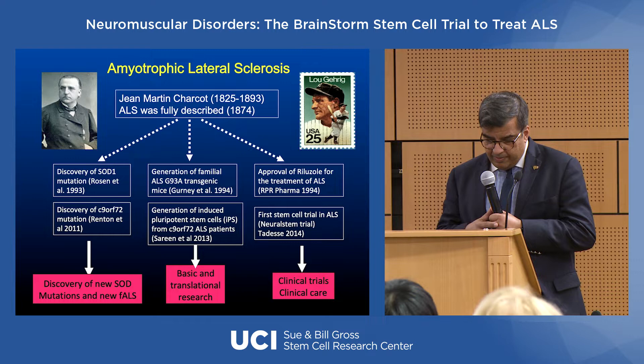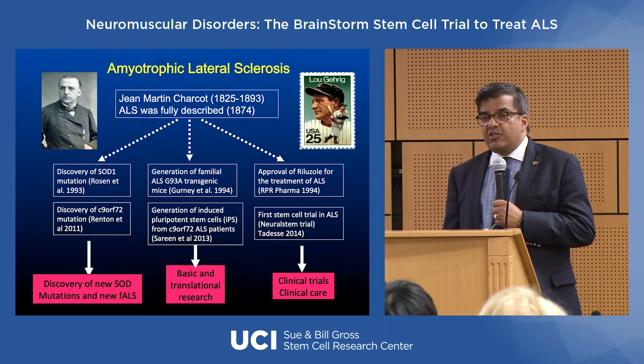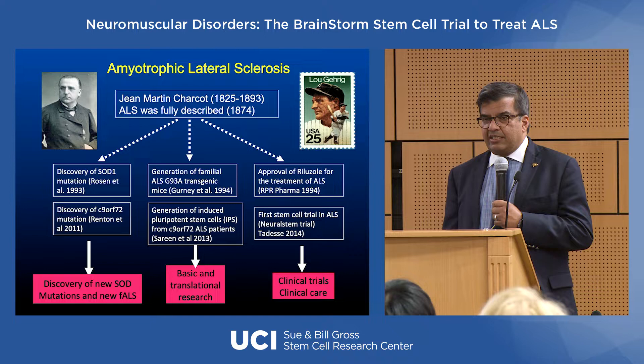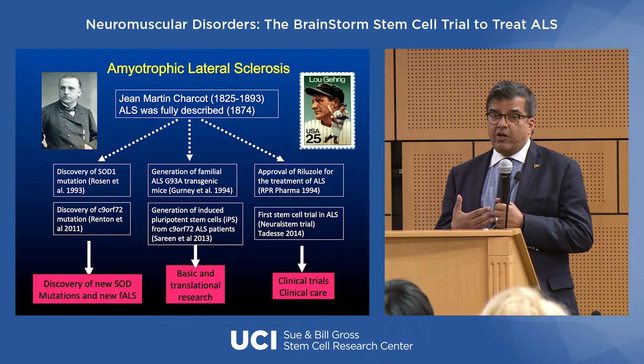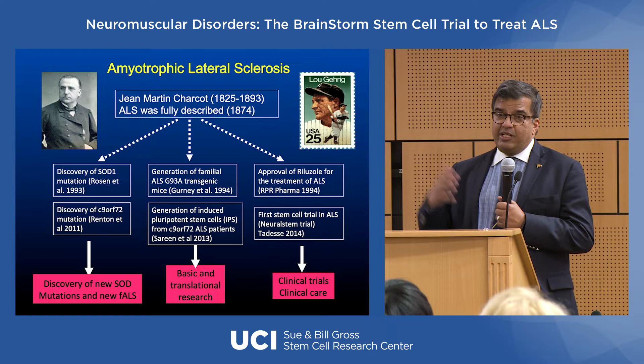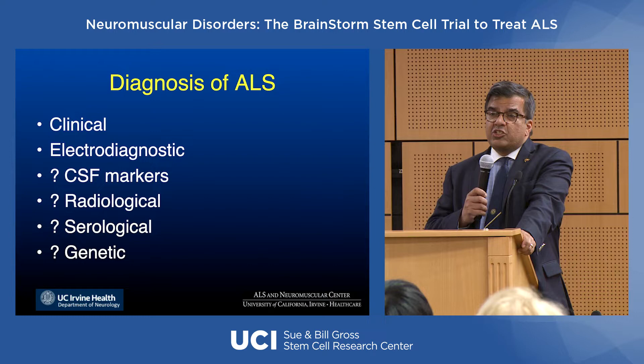The disease has been known for over 150 years since Charcot first described it. The real first breakthrough happened in 1993 when the first gene, SOD1, was described by Rosen and Tipu Siddique — and Tipu Siddique is going to be speaking here on Friday. The discovery of the C9orf72 gene, the most common gene mutation in ALS, accounts for about 43 percent of all familial forms. The first treatment, riluzole, was discovered and approved by the FDA in 1994, and it took another 20-plus years before edaravone, the second approved drug, was approved.